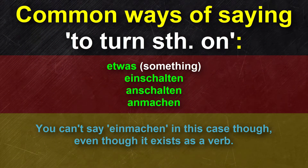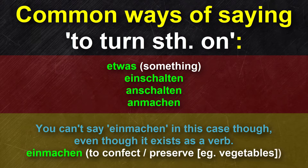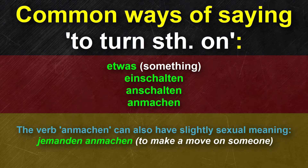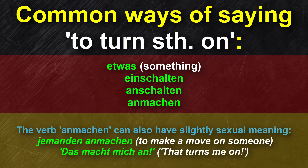We do have the verb einmachen in German, but it actually means to confect — to preserve something, for instance some kind of food. By the way, jemanden anmachen means to make a move on someone. There's also the phrase das macht mich an — that turns me on.